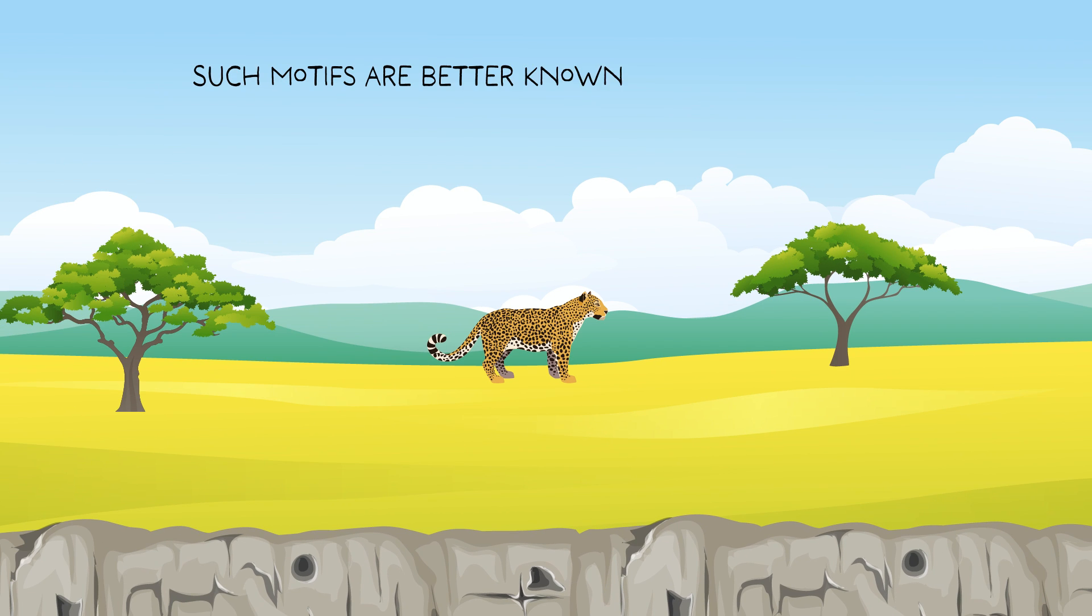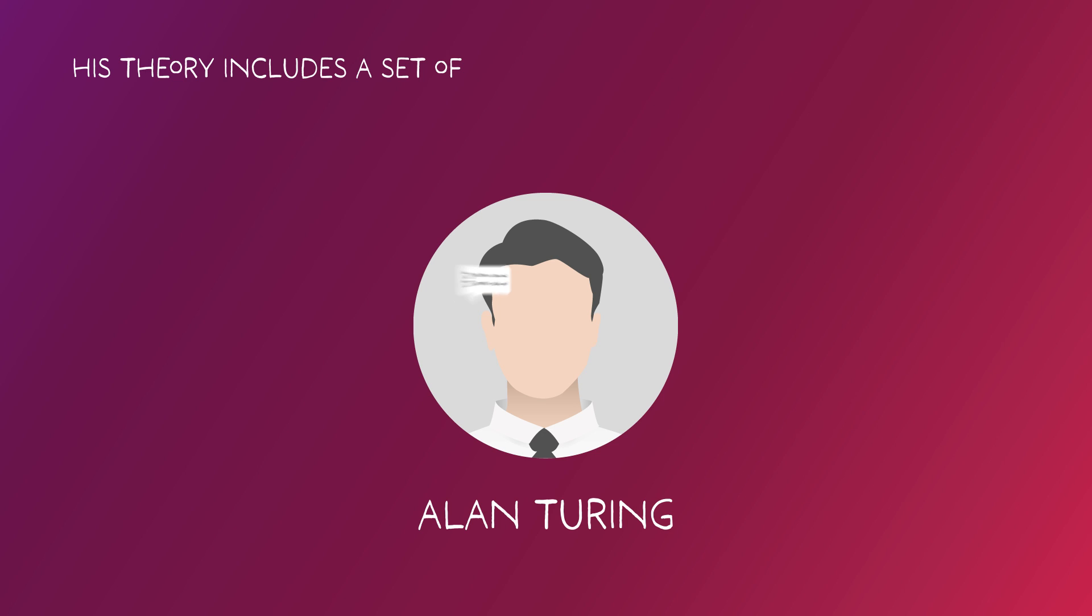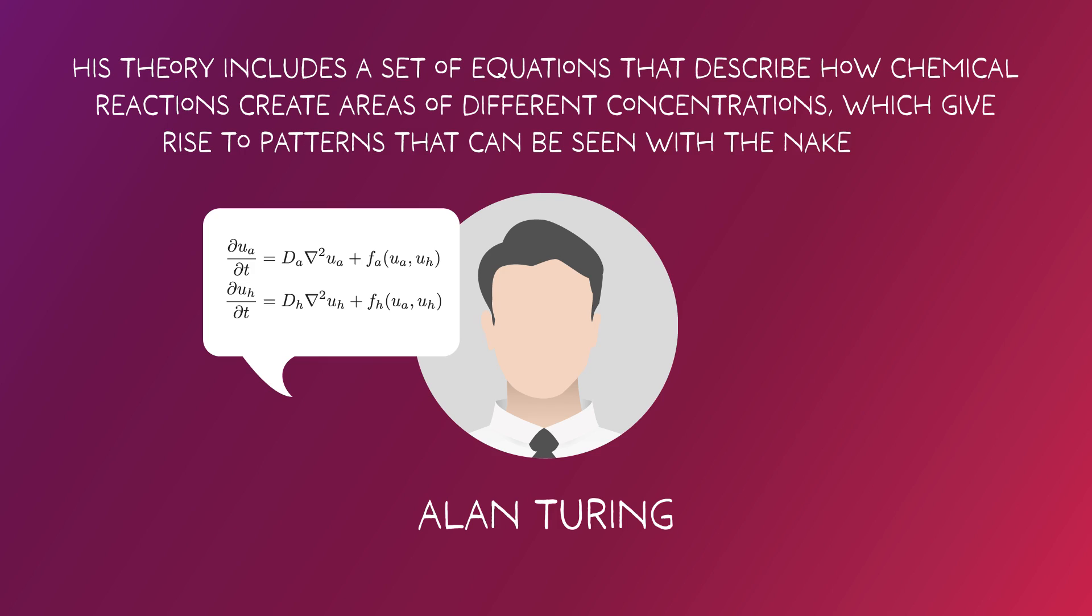Such motifs are better known as Turing Patterns, named after the famous mathematician and codebreaker Alan Turing, who proposed the theory behind them. His theory includes a set of equations that describe how chemical reactions create areas of different concentrations, which give rise to patterns that can be seen with the naked eye.